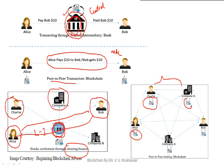Each and every node has the record of previous transactions, and all have the same copies. Whatever transactions are present in Alice's ledger, all those transactions are also present in Charlie's ledger, Company A's, Bob's, and Company B's ledger. This is the advantage of the peer-to-peer system. If Alice wants to buy shares of any company, direct communication goes from Alice to Company A, and if she wants to sell, she can sell directly to Bob, with all history available in the ledger itself — no trusted party needed.